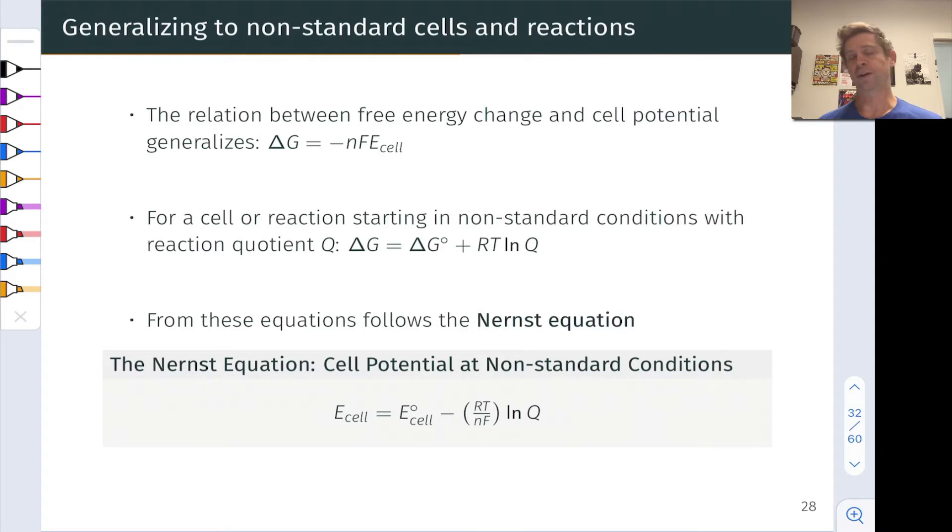The first point on this slide is actually quite nice. The relation between free energy change and cell potential generalizes to a non-standard cell. So delta G, now without the little circle indicating standard state, is equal to negative N times F times E cell without the little circle indicating the non-standard cell potential.